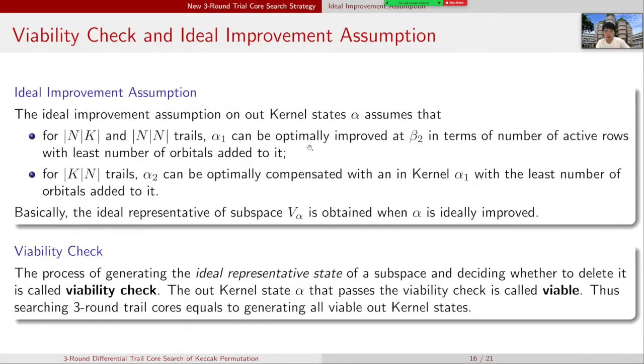It just represents the optimal number of active rows of three-round trail cores of all states in Vα. It indicates the lower bound of the whole subspace. So if the ideal representative of subspace cannot meet the weight requirement T3, the whole subspace can be safely discarded. The ideal improvement assumption on all the out kernel state α assumes that α1 can be optimally improved at β2 in terms of the number of active rows with least number of orbitals added to α1. So basically, the ideal representative of subspace Vα is obtained when α1 is ideally improved. The process of generating the ideal representative state of subspace under the ideal improvement assumption and deciding whether to delete it or not is called viability check. The out kernel state that passes the viability check is called viable. So searching three-round trail cores equals to generating all viable out kernel states.